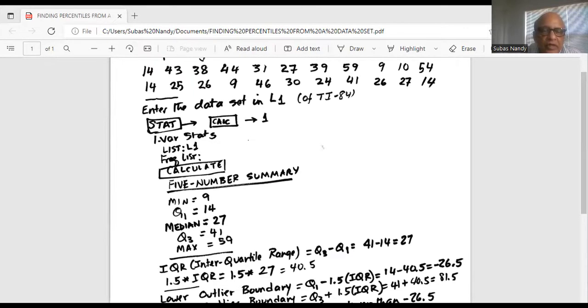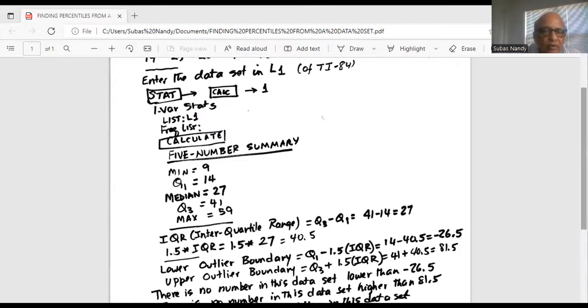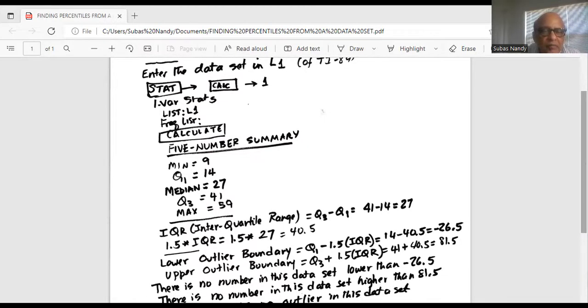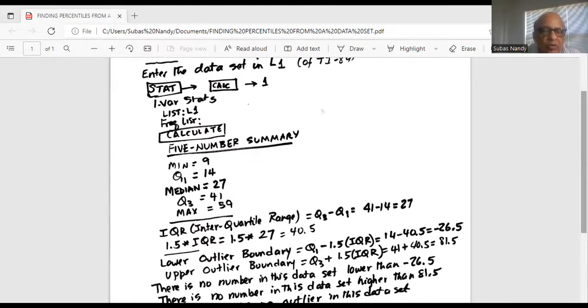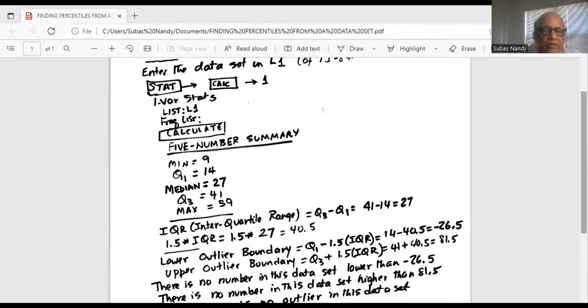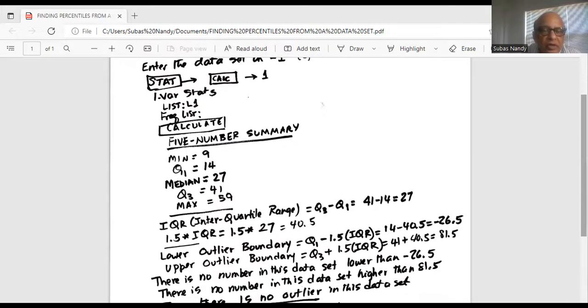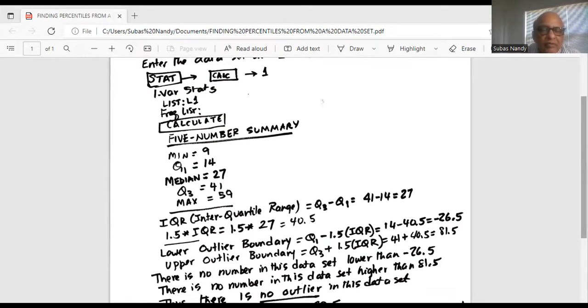We get the five-number summary from which we get the minimum is 9, Q1, the first quartile, is 14, the median is 27, Q3, or the third quartile, is 41, and the maximum is 59.